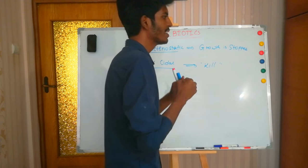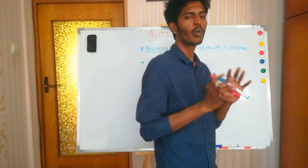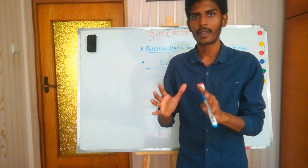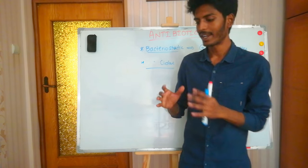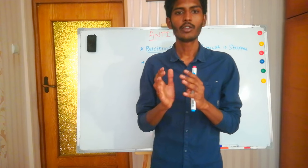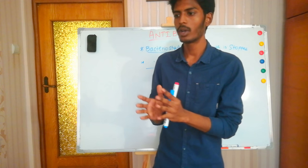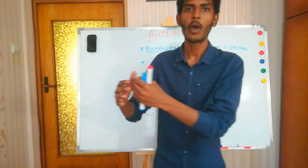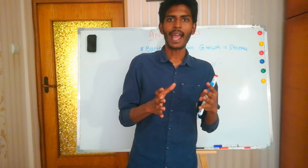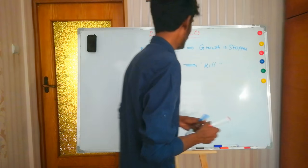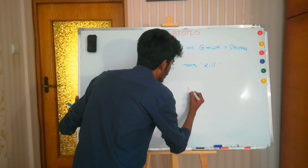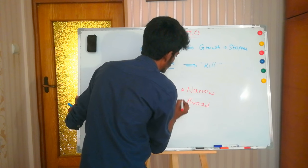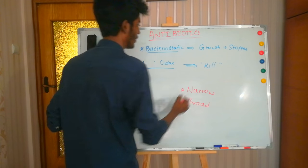Another way to classify antibiotics is based on the spectrum of action. Spectrum of action refers to which group of bacteria the antibiotic will work on. Narrow spectrum antibiotics work only on a particular bacteria or group of bacteria, while broad spectrum antibiotics have action on a wide range and can act on multiple groups of bacteria.